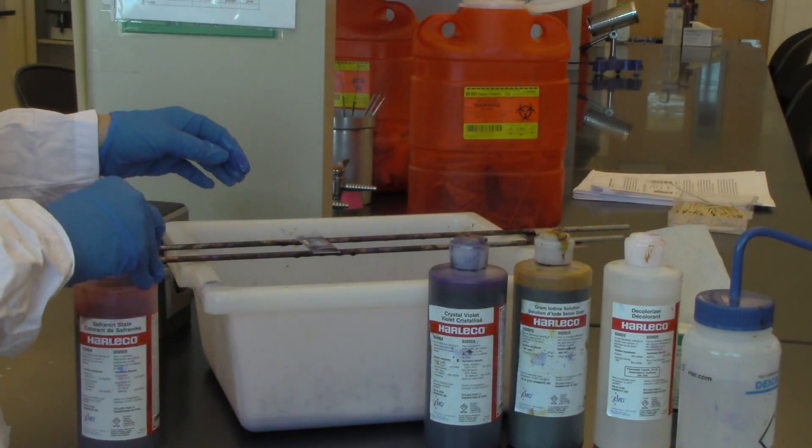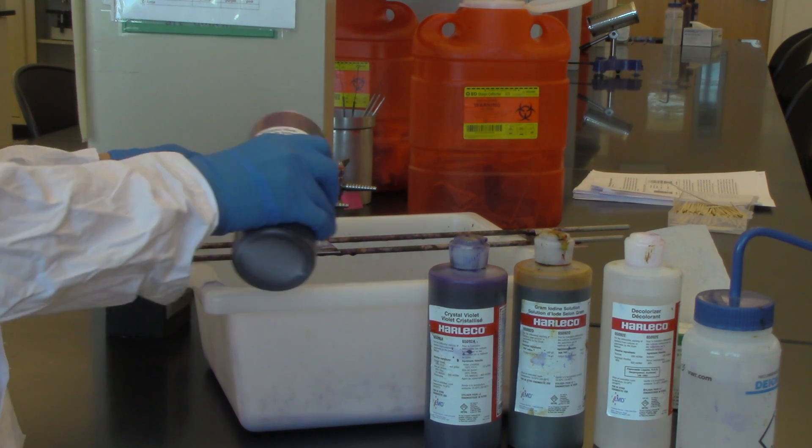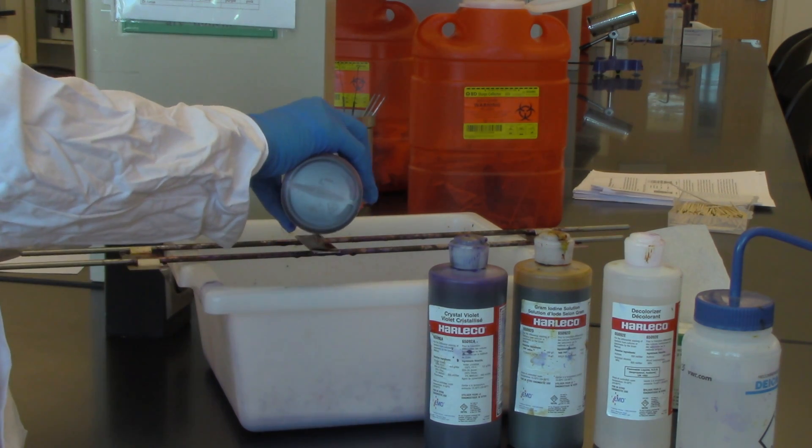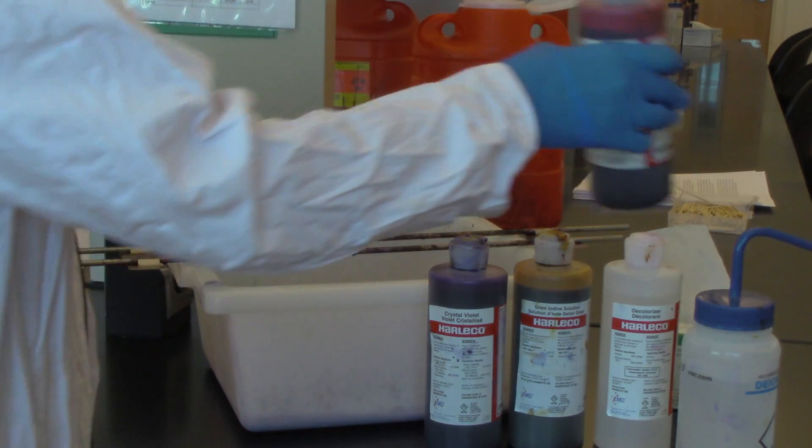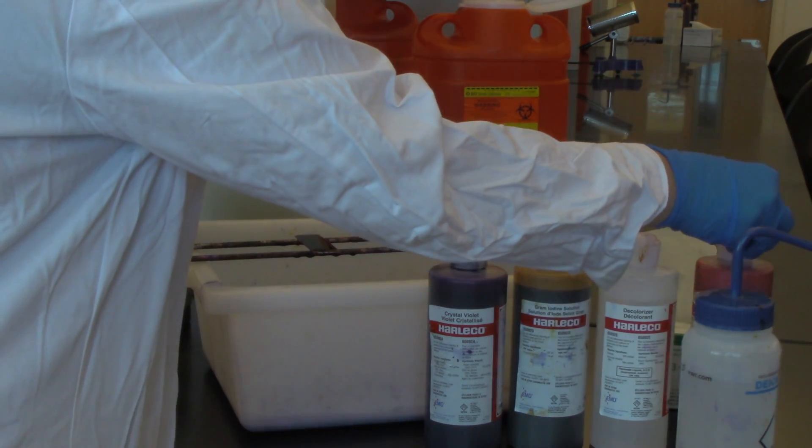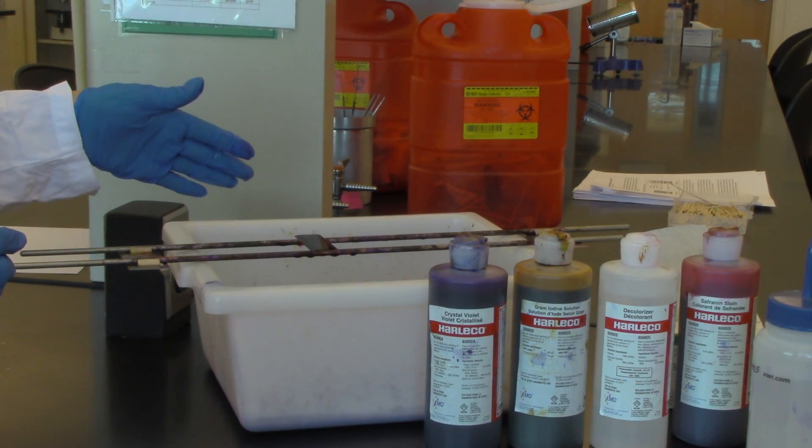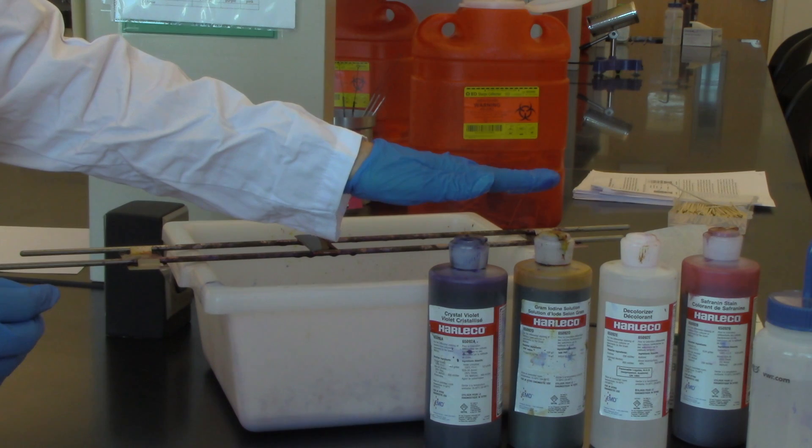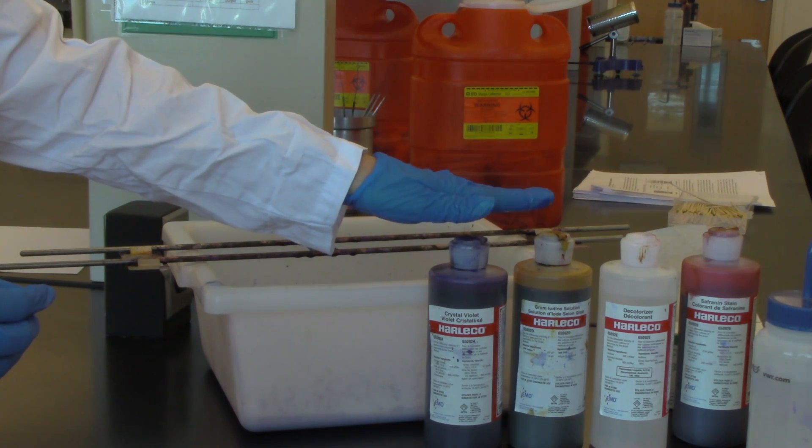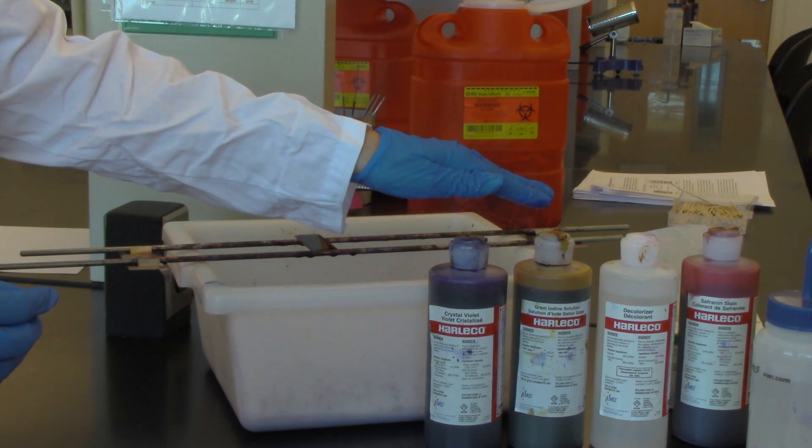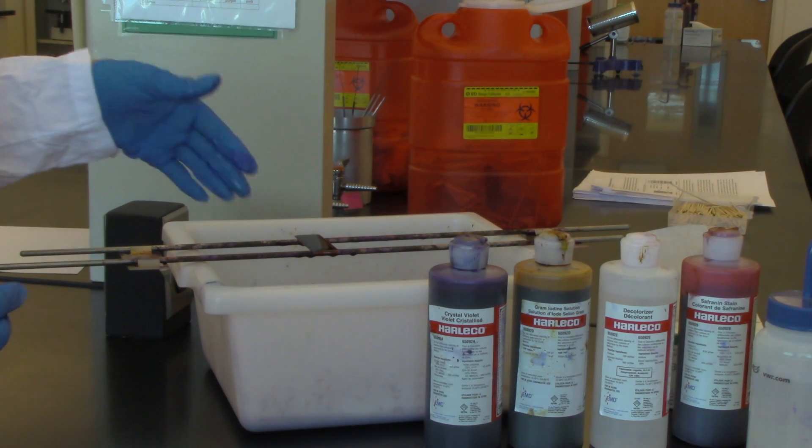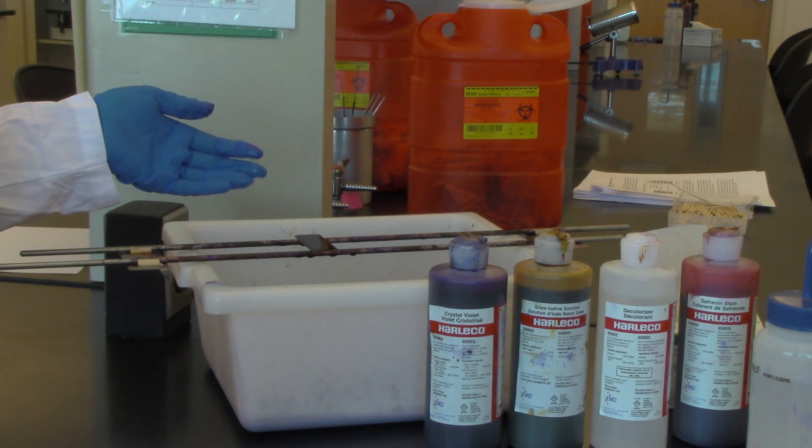Finally, I'm going to add my counter stain or what's called a secondary stain, and that is safranin. If you were to have a slide with specimen that had all gram-negative cells and you only added the crystal violet and the gram's iodine, it would end up washing out at the decolorizing step and you would be left with clear cells.